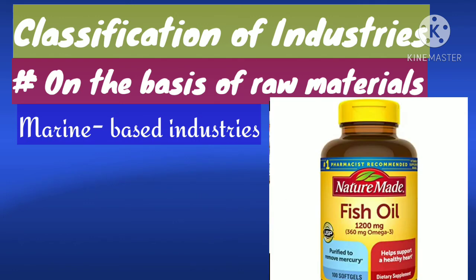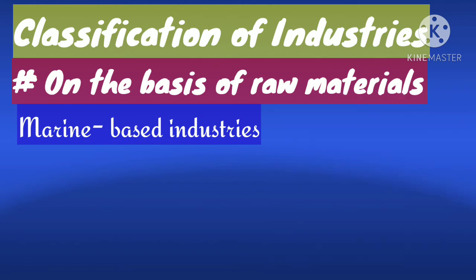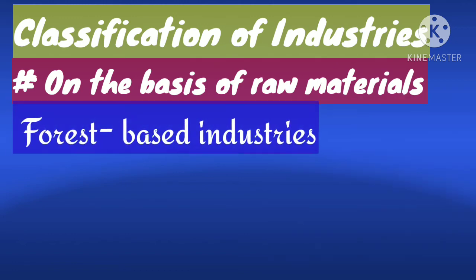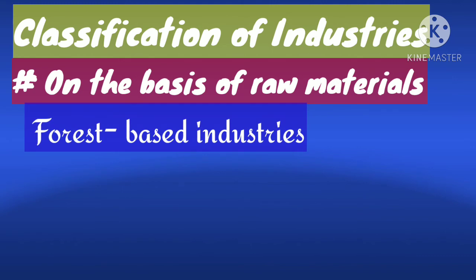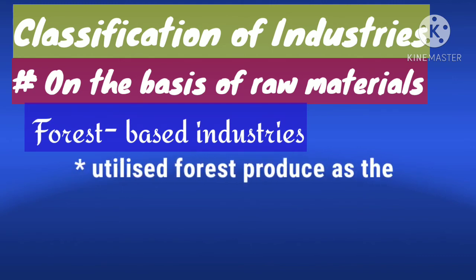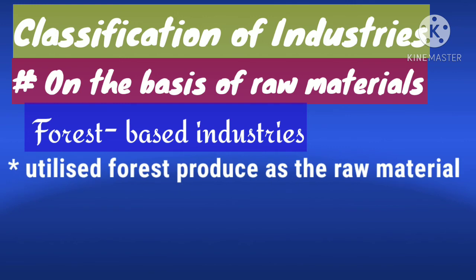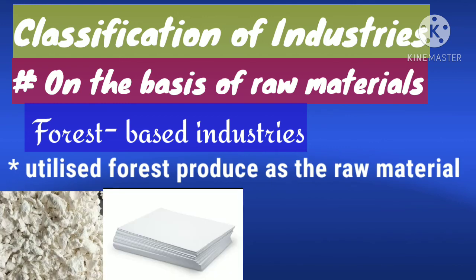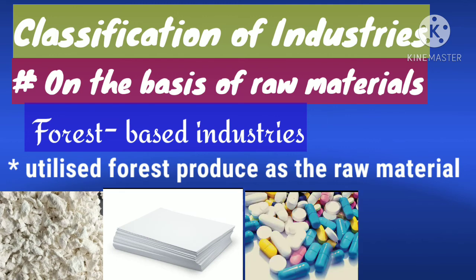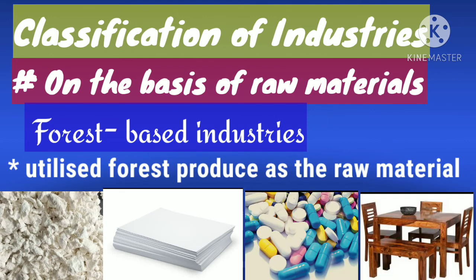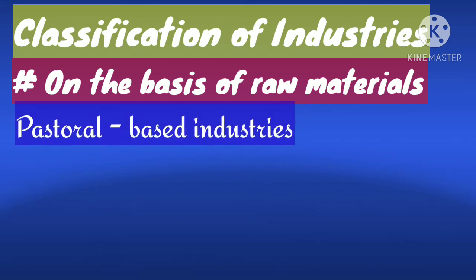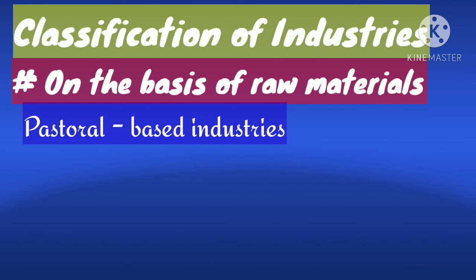The fourth category is forest-based industries. Forest-based industries utilize forest produce as a raw material. Examples include pulp and paper, pharmaceuticals, and furniture.